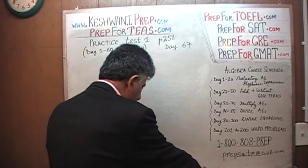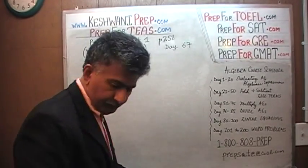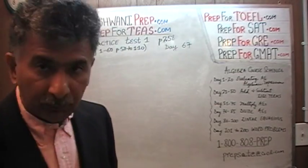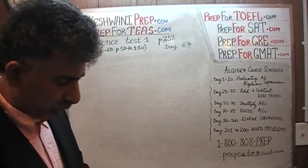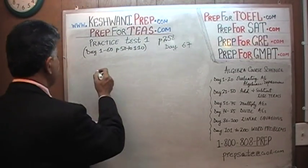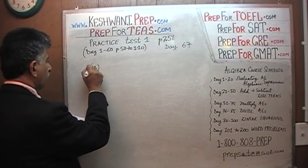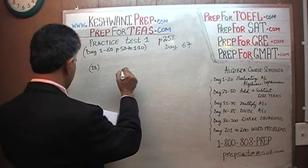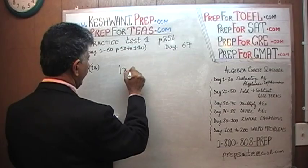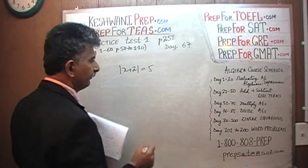The last two problems is what we have to do. Problem number 18 — the one dealing with the absolute value. In number 18, we are told that the absolute value of x plus 2 is equal to 5.